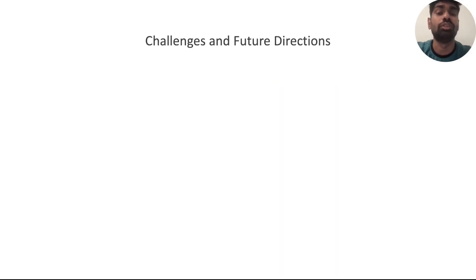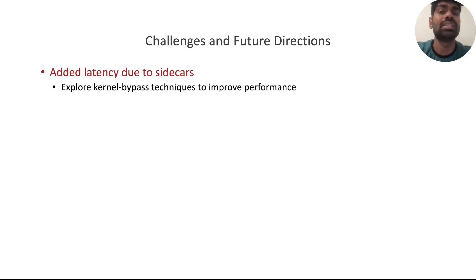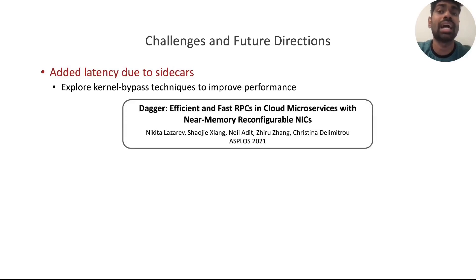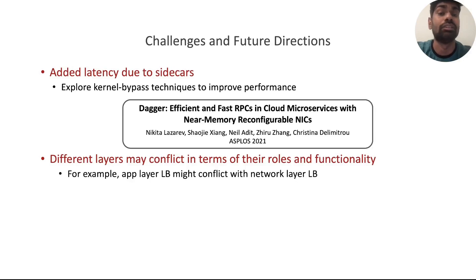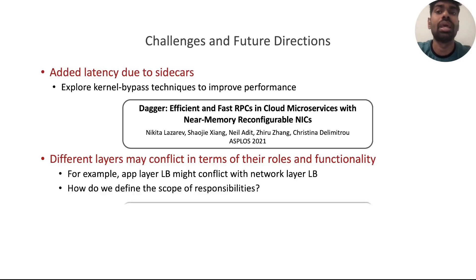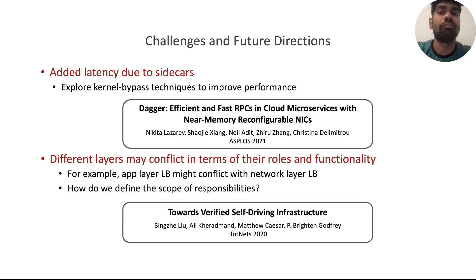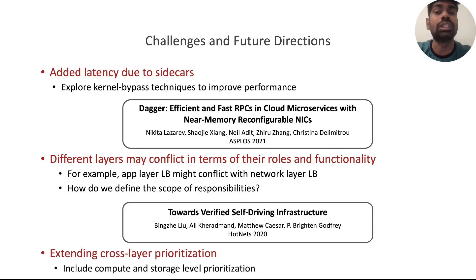Before concluding, I will briefly talk about challenges and future directions. One obvious challenge is the added latency cost due to the sidecar; exploring kernel bypass techniques to improve performance is a possible future direction. Dagger is a recent paper which takes initial steps in this direction. Additionally, different network layers may provide similar functionality and hence conflict with each other — for example, app-layer load balancing might conflict with network-layer load balancing, so how does one define the scope of responsibilities? A HotNets paper from last year highlights this problem. Finally, one obvious future direction is to extend the cross-layer prioritization to also include compute and storage.